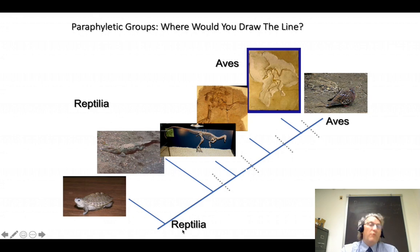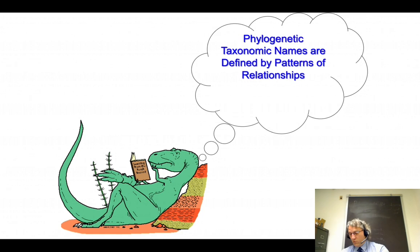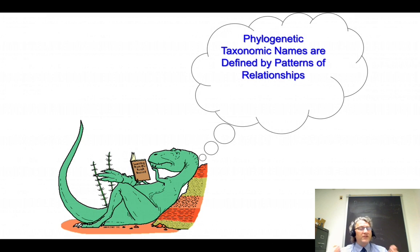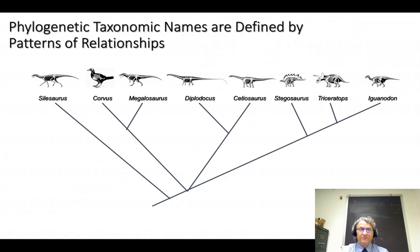We generally prefer Sauropsida, and Aves is part of that group. By ensuring all our groups are monophyletic — an ancestor and all of its descendants — we can create phylogenetic definitions for names. A definition here is a statement of relationships, not the etymology of the name or the diagnosis of features used to recognize it. We can create a formula that specifies what a group represents on the tree of life and then test whether a particular taxon belongs based on its phylogenetic relationships.